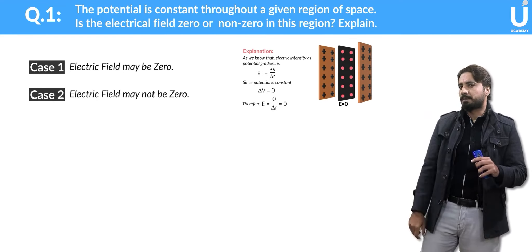We have to consider a positive charge. This is a positive charge. For this positive charge, we know that electric field lines will be radially outward. If you follow the positive charge's electric field lines, you are going away from the charge. And if you are going away from the charge, then the distance — the value of R — increases.